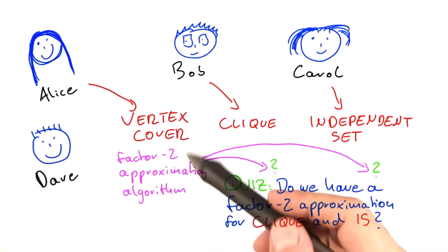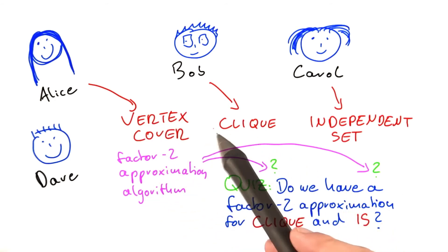So the question now is, given this factor 2 approximation for vertex cover, and given the close relation of vertex cover to clique and independent set, do we now also know that there is a factor 2 approximation for clique and independent set? And I'm just writing independent set as IS here to save some space.